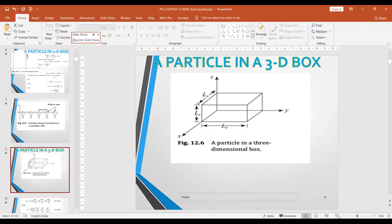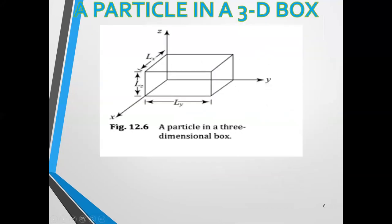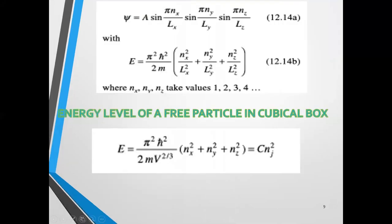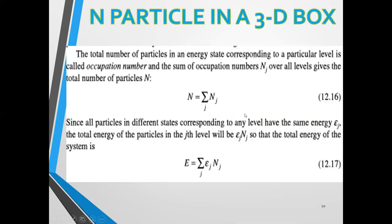A particle in a three-dimensional box is no different — it is just that we now consider three dimensions. The wave function ψ can be written as equation 12.14a, and its energy eigenvalue as equation 12.14b. The energy levels for a free particle in a cubic box are E = (π²ℏ²)/(2mV^(2/3)) × (nx² + ny² + nz²), which can be written as Σnj². These principal quantum numbers nx, ny, nz correspond to the three different directions.